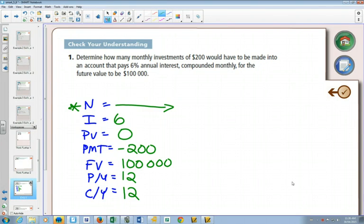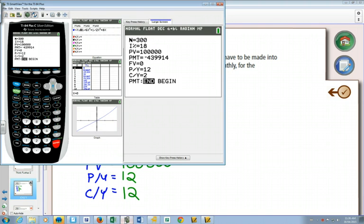So now you type in everything into your calculator. It doesn't matter what is in N right now. If it's 300, you can't have it blank. It has to have a number in there, but everything else we can put in. So 6, we're not starting with any money, we're putting $200. Make sure you use the negative sign.